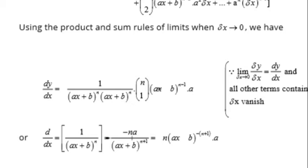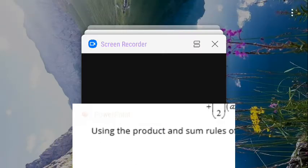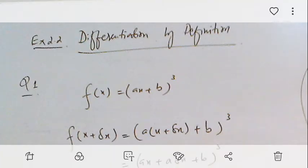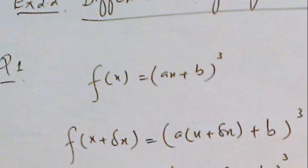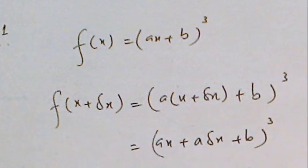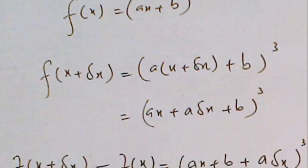In the exercise we use a simple method. Let's try to solve the questions. Here we have (ax + b)^3. We replace x by x + δx.